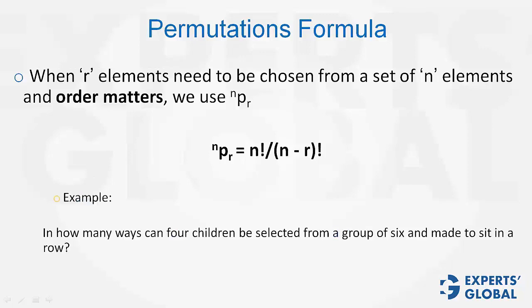In how many ways can 4 children be selected from a group of 6 and made to sit in a row? Out of 6, 4 have to be selected and arranged. Order matters. Therefore, it's going to be 6P4. Turns out to be 6 factorial divided by 2 factorial equals 360.